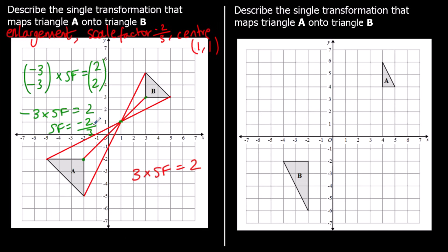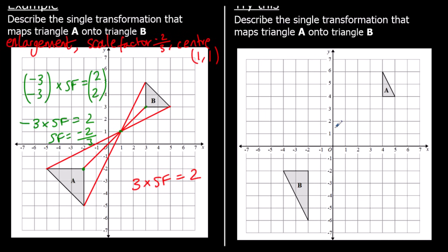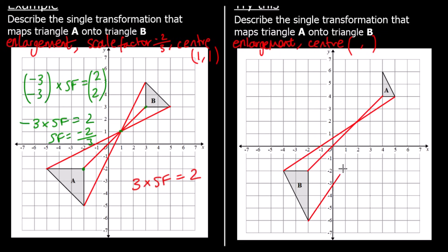Here's another one: describe the transformation that maps triangle A onto triangle B — try and give this one a go. Again, the first bit of information is that it's an enlargement, and we need to find the scale factor and the centre. So we'll find the centre of enlargement first: join up each point on triangle A with the point it goes with on triangle B, and we can find the centre, which in this case is (2, 2).